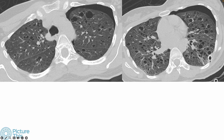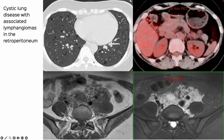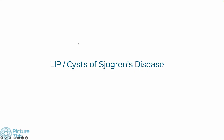This patient has rounded cysts and normal intervening lungs but also had multiple lymphangiomas in the retroperitoneum. This is one more confirmatory finding that tells us we are dealing with LAM.